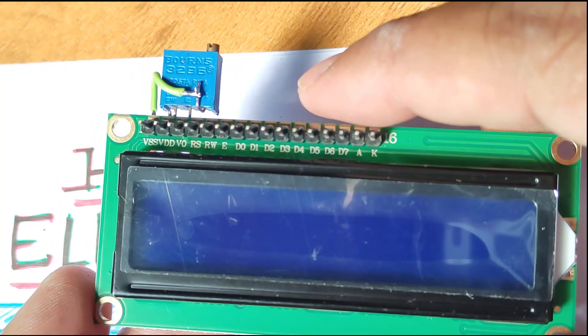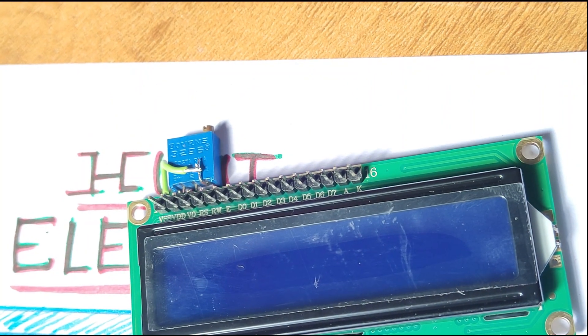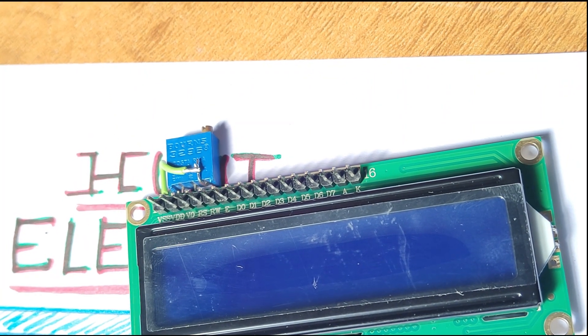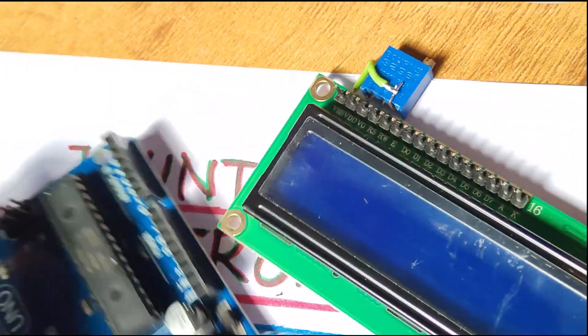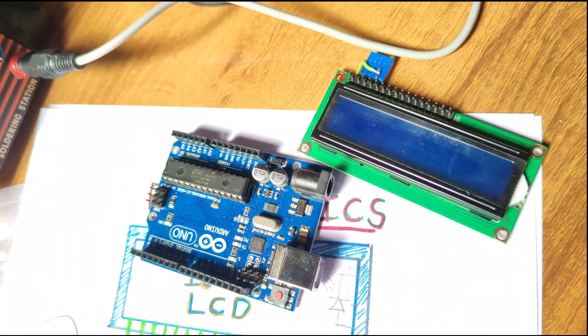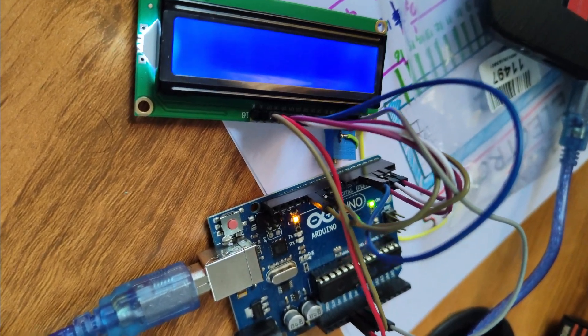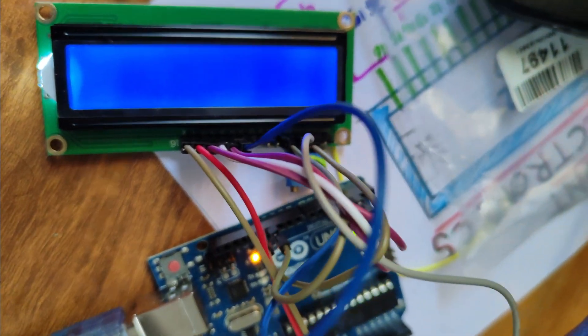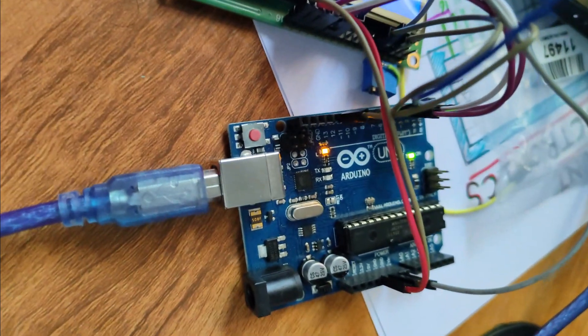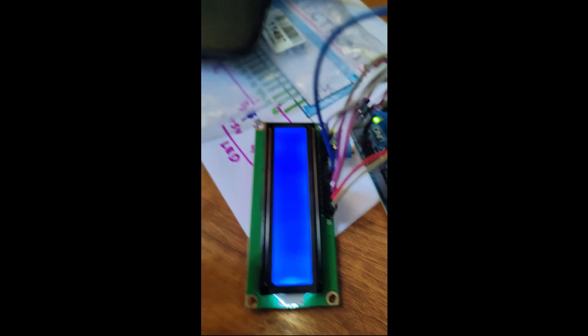Now let us connect our 16 by 2 display to the Arduino Uno and let us check the output. As we have finished with all soldering stuff, now I have connected this 16 by 2 display with Arduino. Let us do some programming work.